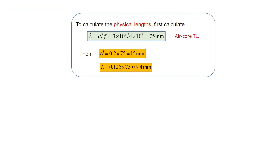Now we calculate the physical lengths. Since we have an air core transmission line, the wavelength is simply c divided by f — speed of light divided by frequency. With c equal to 3×10⁸ metres per second and f equal to 4 gigahertz, we get lambda equal to 75 millimetres. From this, D equals 15 millimetres and L equals 9.4 millimetres — quite short lengths, very easy to implement on a printed circuit board or microstrip line.